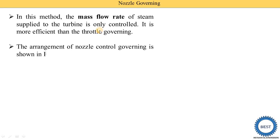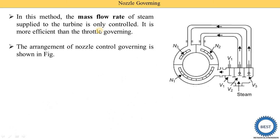The arrangement of nozzle control governing is shown in the figure. Here you see this is the diagram for nozzle governing. The center part is for the turbine rotors. These are the various nozzles, and here you can see these nozzles are divided into various sets.